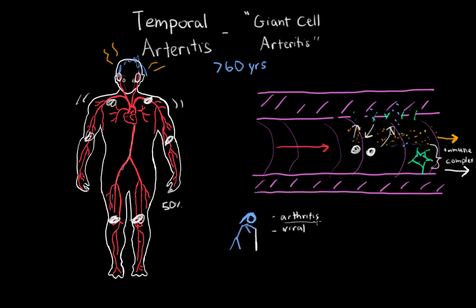There are many different types of arthritis, including osteoarthritis, or you may have heard of rheumatoid arthritis. And these are other causes of joint pain. Temporal arteritis, on the other hand, isn't primarily affecting joints. It's affecting joints as a secondary cause of these immune complexes.